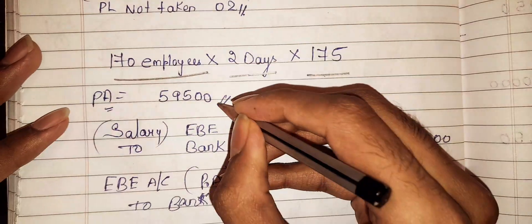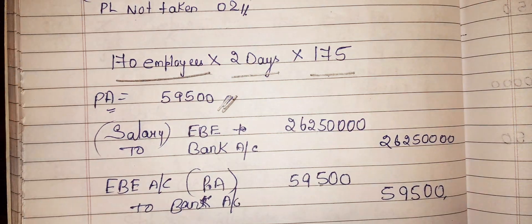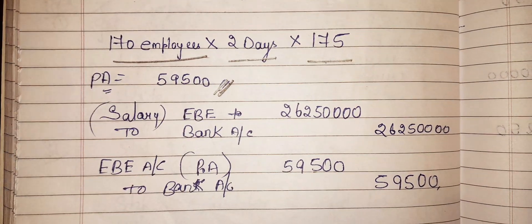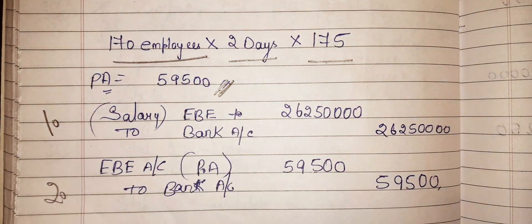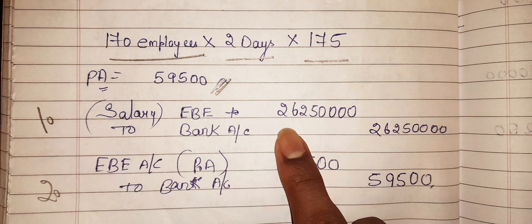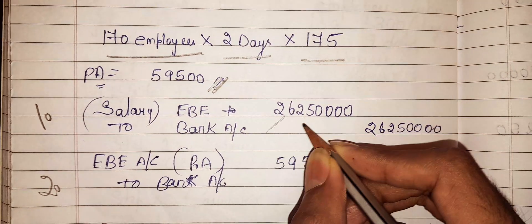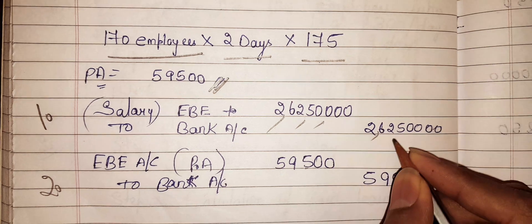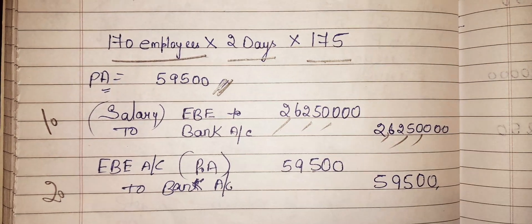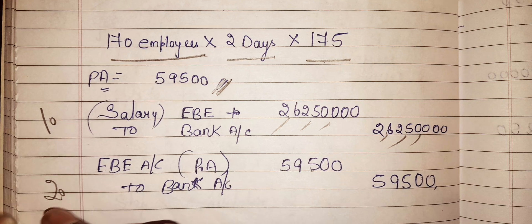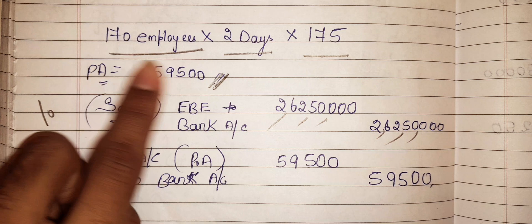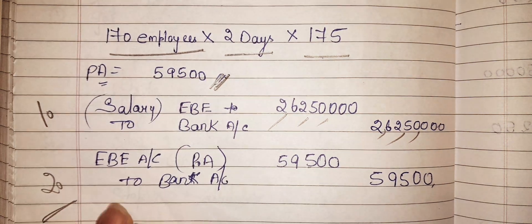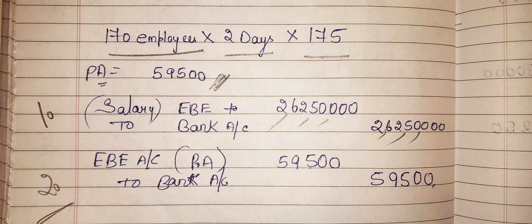This gives us ₹59,500 as our paid absence amount. We pass two entries: first, Employee Benefit Expense (Salary) debit ₹2,62,50,000 to Bank account. Second, Employee Benefit Expense (Paid Absence) debit ₹59,500 to Bank account for the paid absence amount.